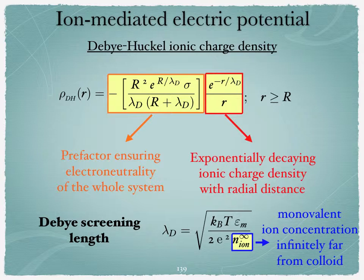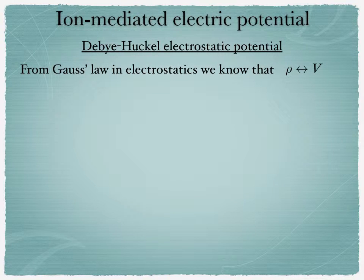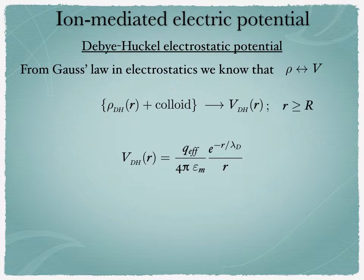Now the only thing that remains is to determine from this charge density how to get the actual potential. To do that, we remember that from Gauss law in electrostatics, there is a correspondence between the electric charge density rho and the corresponding potential. So here, if we have the Debye-Huckel ionic charge density associated to the charge of the colloid, we can get the Debye-Huckel potential associated to the whole distribution of charge.